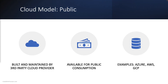On the other hand, public cloud infrastructure is built and maintained by third-party cloud providers and is available for public consumption. Azure, AWS and GCP are some of the popular public cloud providers. They offer low upfront cost and enable organizations to access a wide range of services on demand.